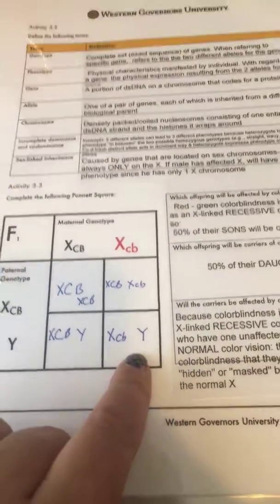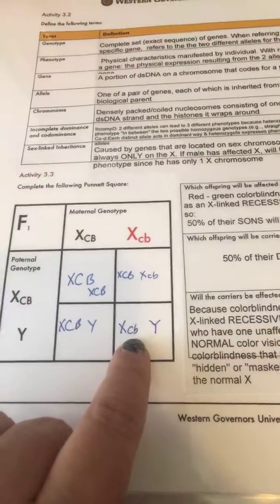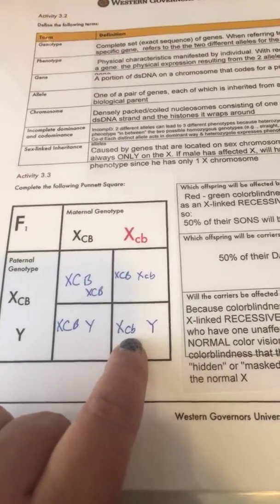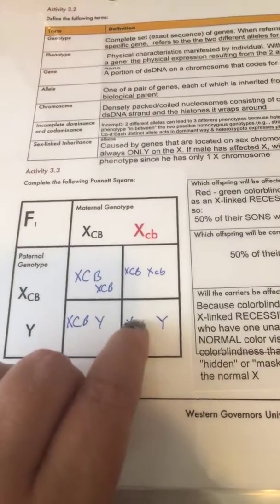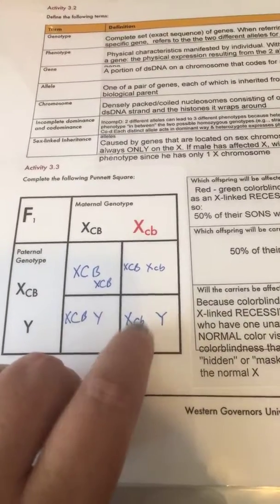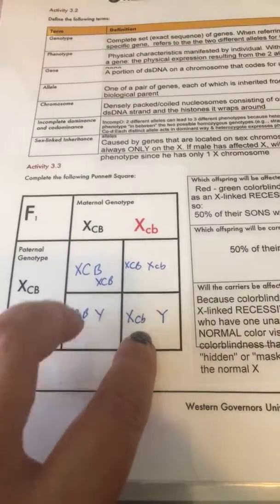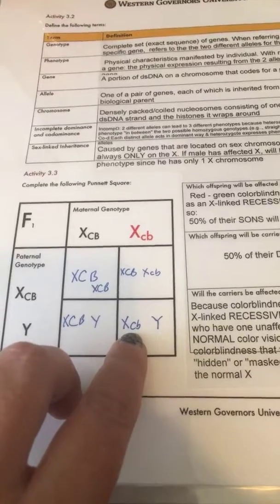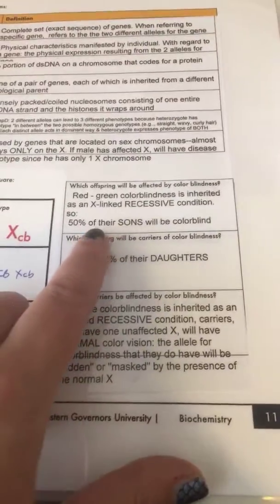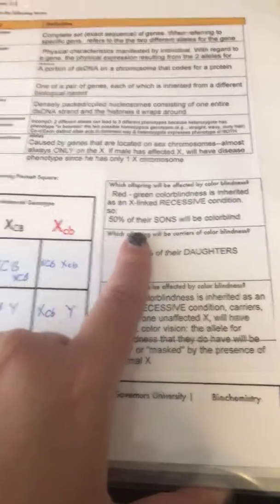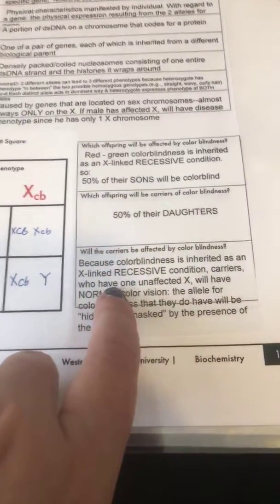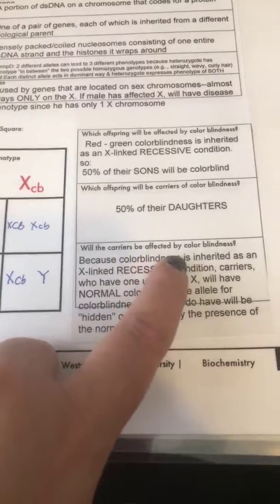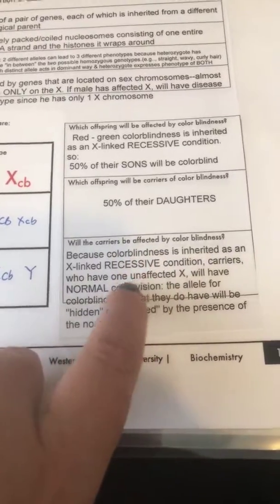So this is going to be a male that has colorblindness because it is an X-linked recessive. Remember that the recessive has to have copies of the little guys. Any big letters would be dominant, the little guys are recessive. So this means that it's an X-linked recessive — 50% of their sons are going to have it, 50% of their daughters.